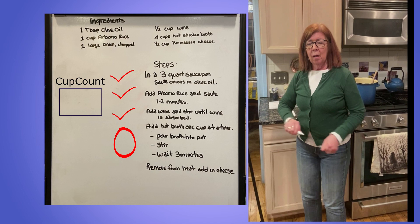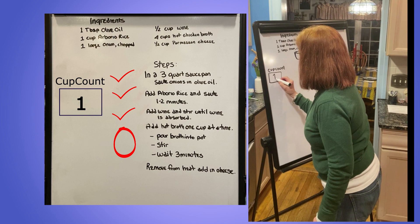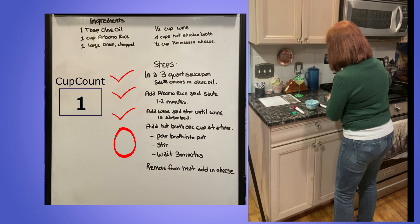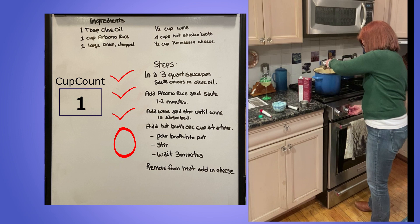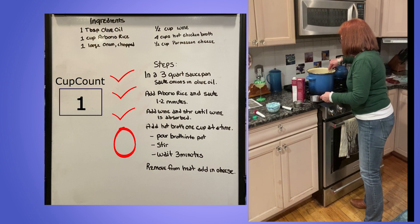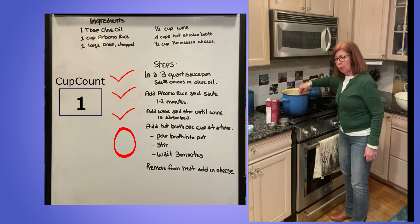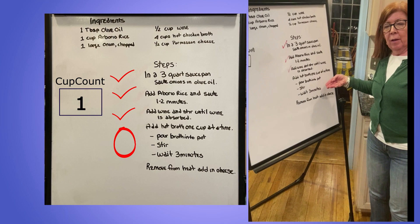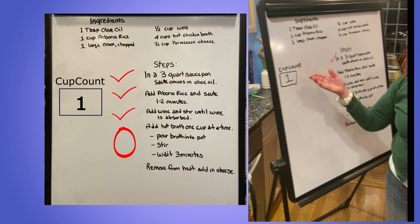I'm going to start with cup one. Now I'm doing step two of the sequence by stirring. I'm finished stirring and now I'm going to wait three minutes before I put in the next cup. Whenever I look at cup count, I know how many cups have been added to the saucepan.